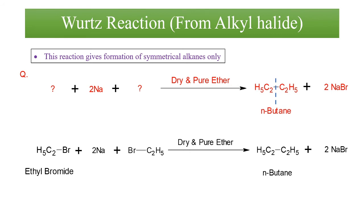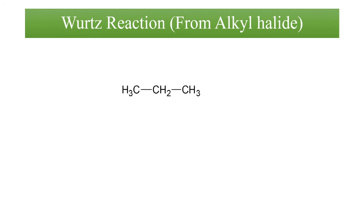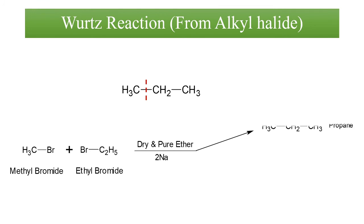If we have to prepare propane, propane is an unsymmetrical alkane. I cannot break this into two equal parts, so I have to break it unequally. So one part attached to the halogen is methyl bromide; the other part is ethyl bromide. So in presence of sodium and dry and pure ether, if ethyl and the methyl group will combine, it will give us formation of propane.